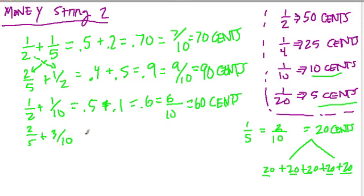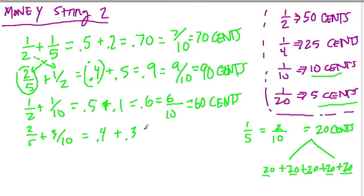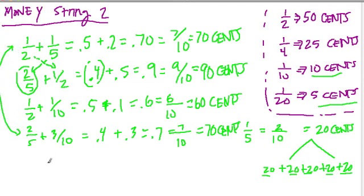What about two fifths plus three tenths? Two fifths is forty cents — we established that every one fifth is twenty cents, so two fifths is double that, or 0.4. Three tenths is like three dimes, or 0.3. That equals 0.7, or seven out of ten, or seventy cents. Interestingly, this is the same answer as the first problem.